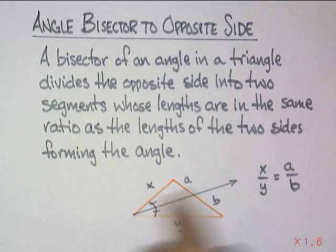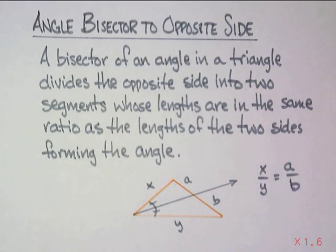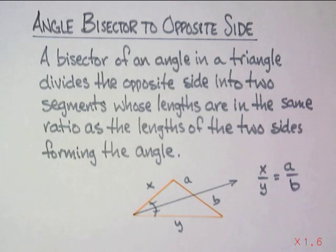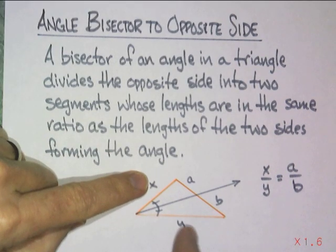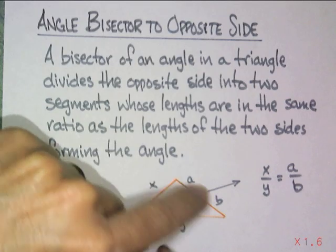A bisector of an angle in a triangle divides the opposite side into two segments whose lengths are in the same ratio as the lengths of the sides that form the angle. Here's the picture without the construction lines — you don't have to draw those; that's just how I proved it using similar triangles.